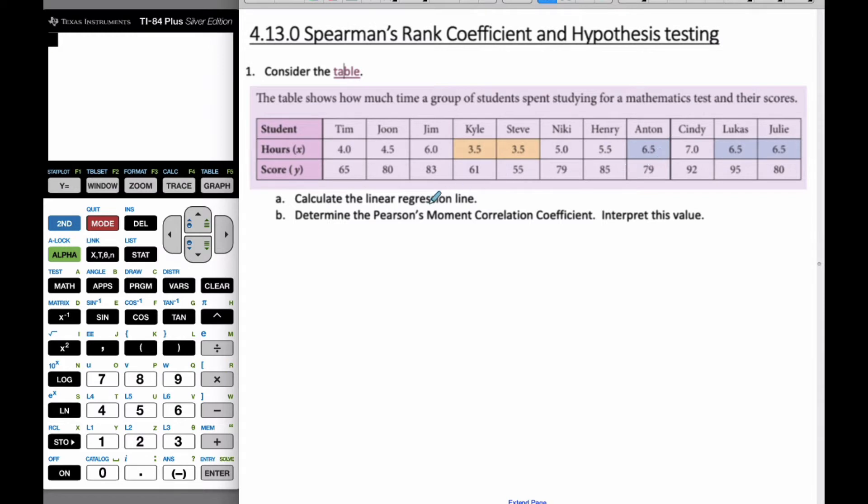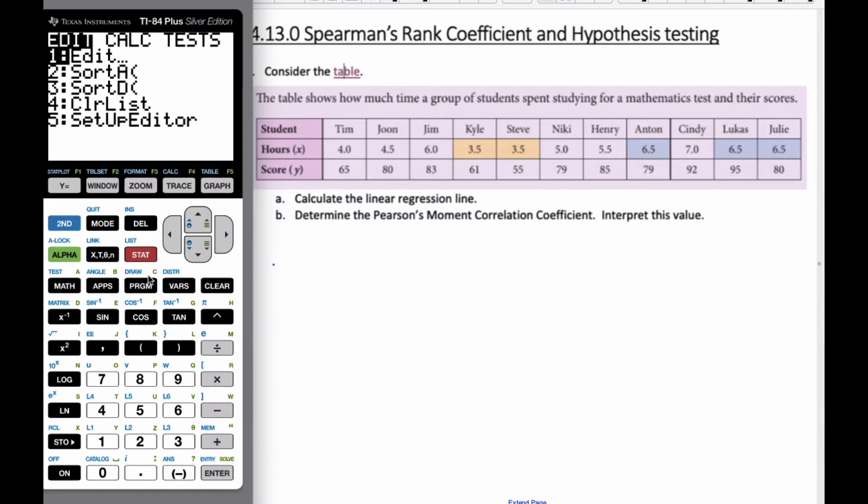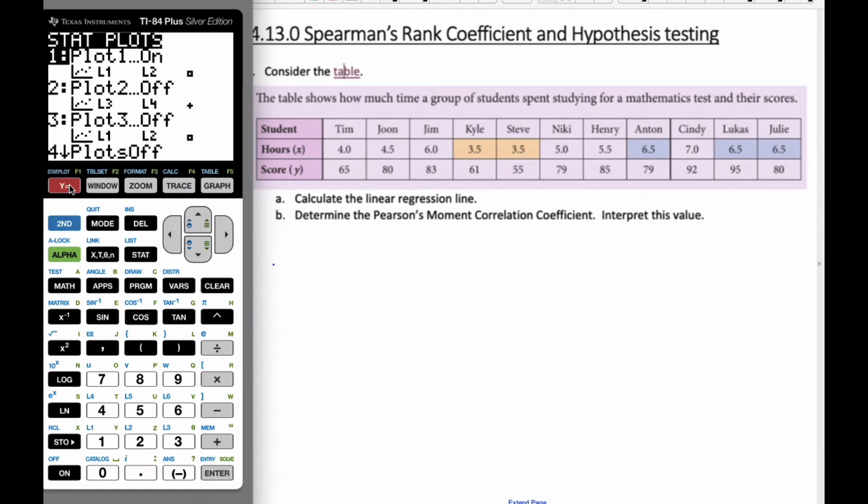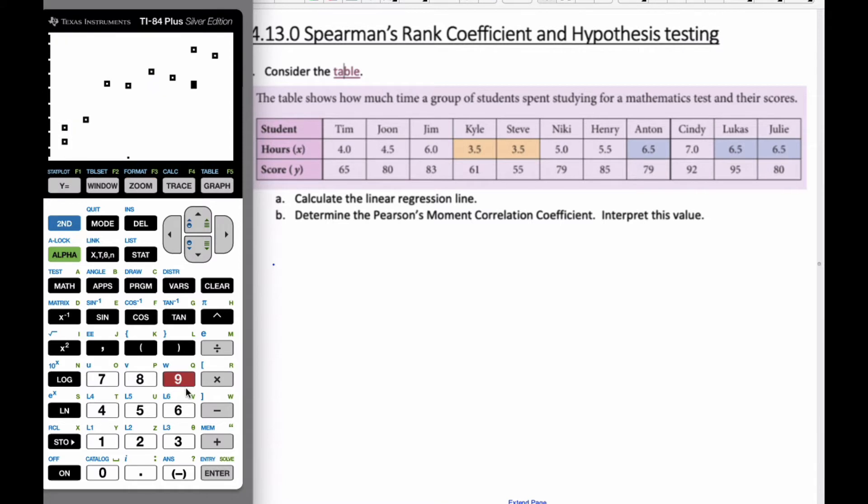Let's actually calculate the linear regression line. Taking a look at the calculator, I've already added these values in. The stat plot is turned on. Let's zoom to number 9, which is statistics. We can see that a linear relationship is quite reasonable for this scenario.